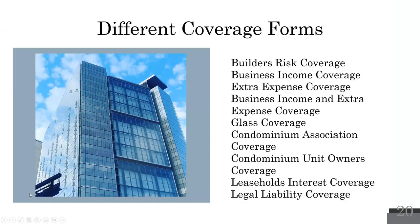There are different coverage forms that can be added to a commercial property policy or purchased separately. Builder's risk covers a building that's being built — anything being installed such as girders, beams, cement, flooring, or air conditioning units. It does not cover the builder's tools, since the contractor has their own coverage. Builder's risk does include theft coverage — unusual since regular commercial property doesn't — covering theft of a building or part of a building during construction. There is no liability on this piece since everyone on-site is covered under workers' compensation.